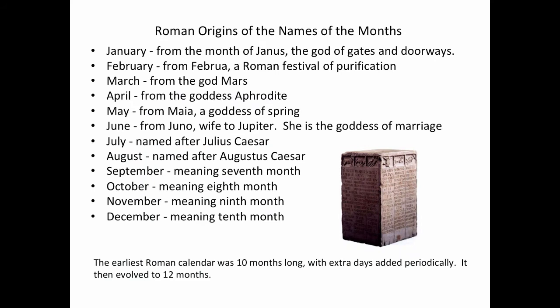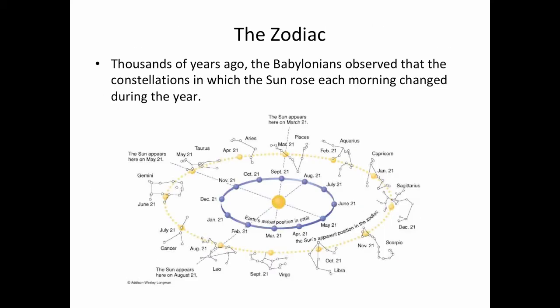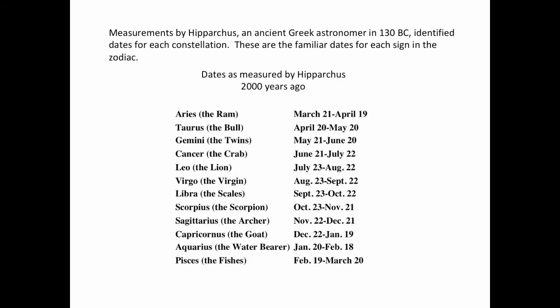There are Roman origins for the names of the months. The earliest Roman calendar was actually ten months long, with extra days added periodically. It then evolved to a twelve-month calendar. Thousands of years ago, the Babylonians observed that the constellations in which the sun rose each morning changed during the year. Measurements by Hipparchus, an ancient Greek astronomer in 130 BC, identified dates for each constellation — these are the familiar dates for each sign in the zodiac.